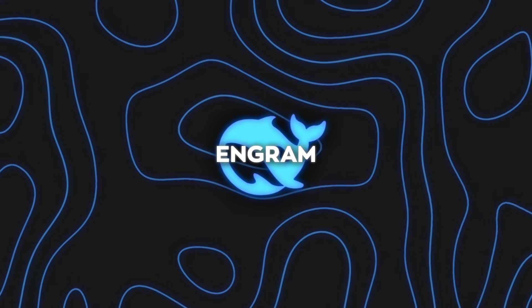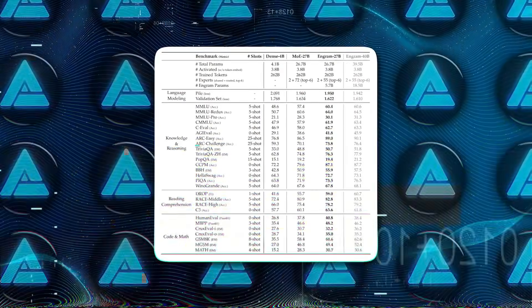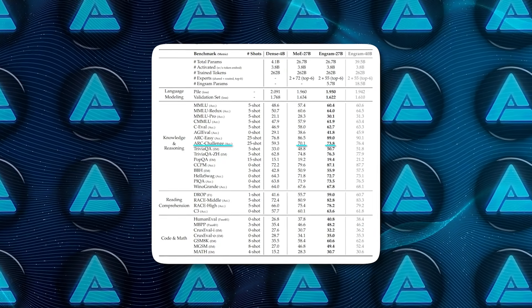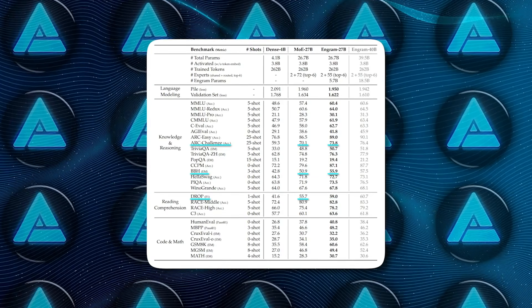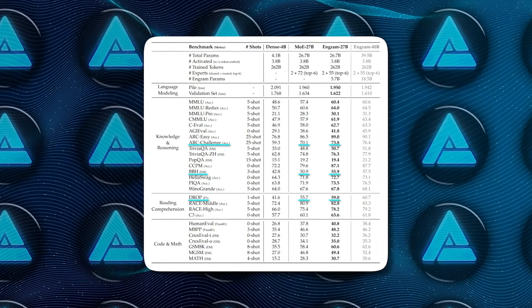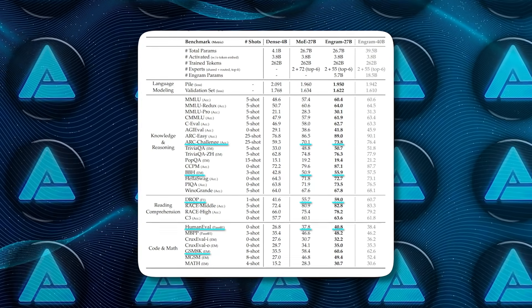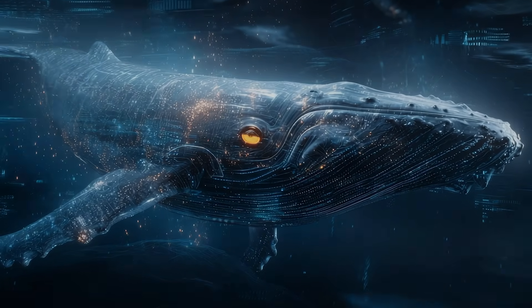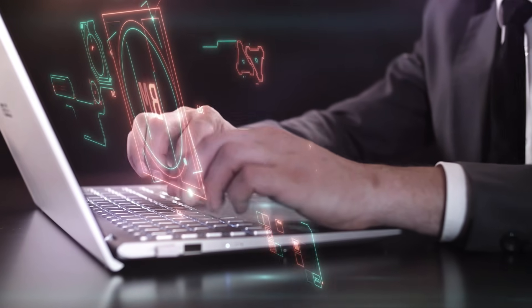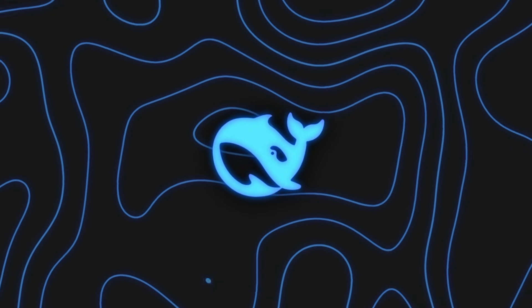Yet here's the wild part. N-gram also boosts the stuff that feels like pure thinking. The kind of tasks where you'd assume memory wouldn't matter that much. Arc Challenge climbs from 70.1 to 73.8. BBH goes from 50.9 to 55.9. Drop F1 rises from 55.7 to 59.0. Even coding improves too. Human Eval goes from 37.8 to 40.8. And math climbs as well, like GSM 8K going from 58.4 to 60.6. So overall, DeepSeek's memory module is improving reasoning, coding, and math. And at first that sounds backwards, because you hear memory module and you think it's just gonna help the model recall facts. So why would it improve reasoning?